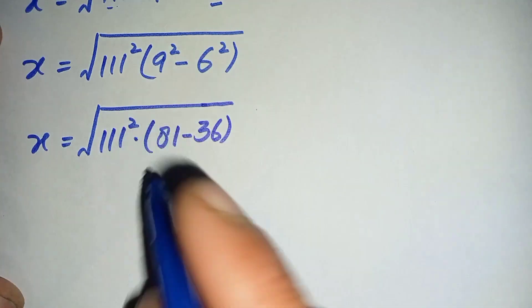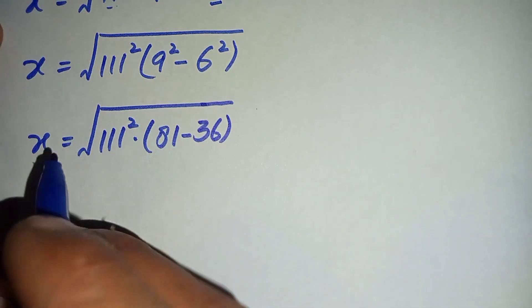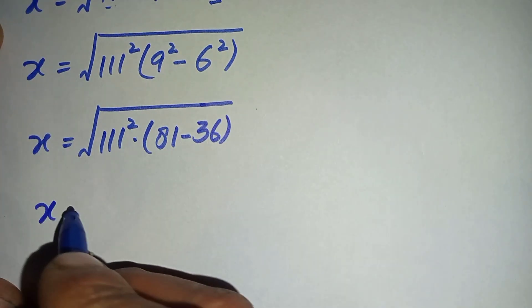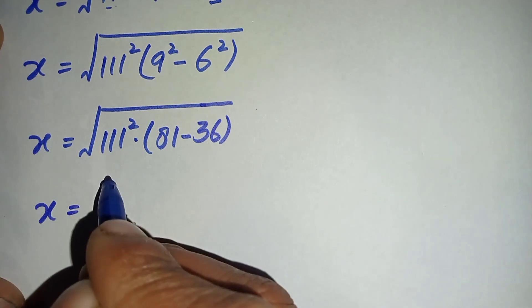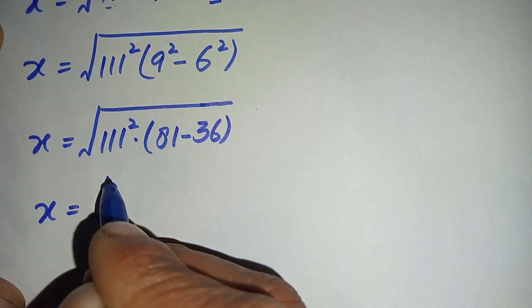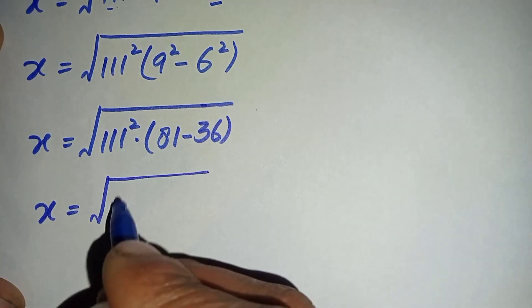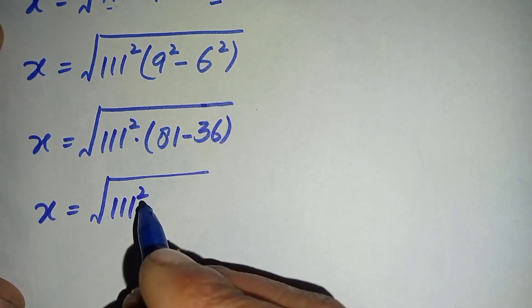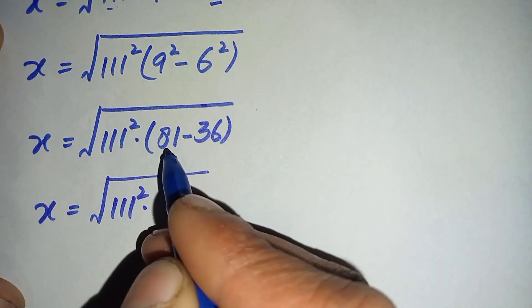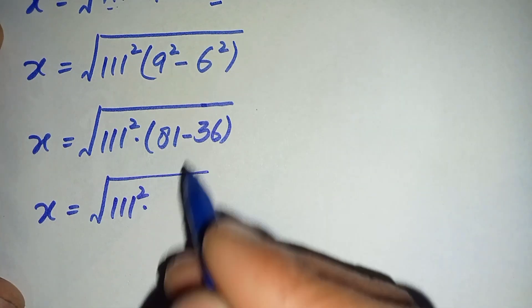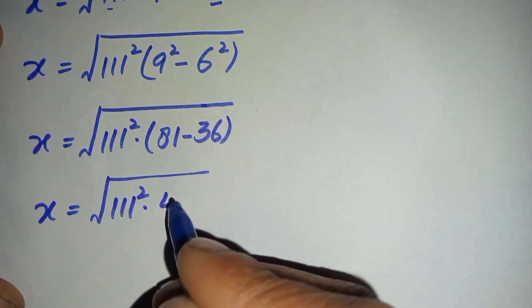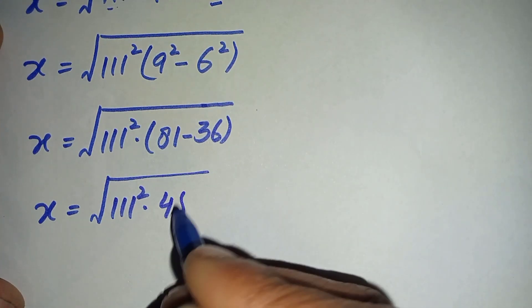Now let us further simplify these numbers. It will become x equals square root of 111 squared times 81 minus 36, which is 45.